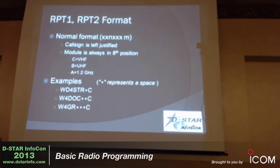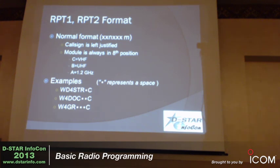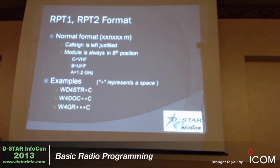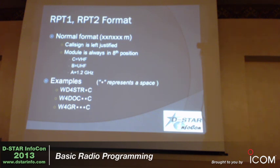The Repeat One and Repeat Two format: call signs can be one-by-one for special events, one-by-two, two-by-one, two-by-two, up to two-by-three max. So you can have anywhere between three and six characters in a call sign field. That call sign is always left justified, meaning you start on the left side — the first character is the call sign. You're going to want to put the module in the eighth position. In the U.S. and most of the world, C is always the two-meter module, B is always the 70-centimeter UHF module, and A is the 1.2 gigahertz voice or data.